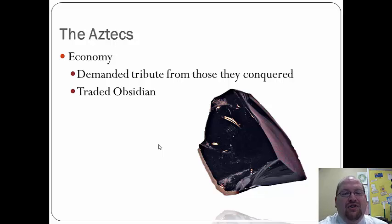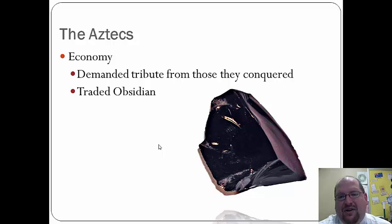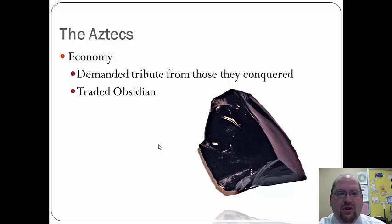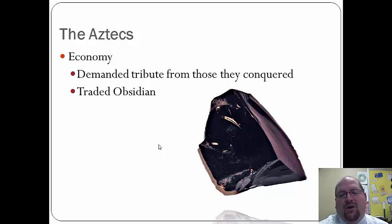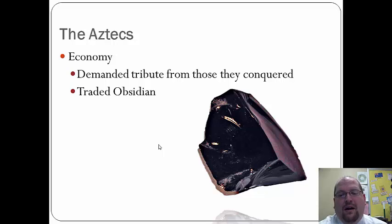The Aztec economy was built on demanding tributes from conquered peoples. Rather than destroying conquered lands, they would let people stay but require a tribute — essentially a tax paid every year or season. One significant trade item was obsidian, a volcanic rock that looks almost like a crystal. It is a very pretty, lightweight rock that they used and traded as a form of currency.